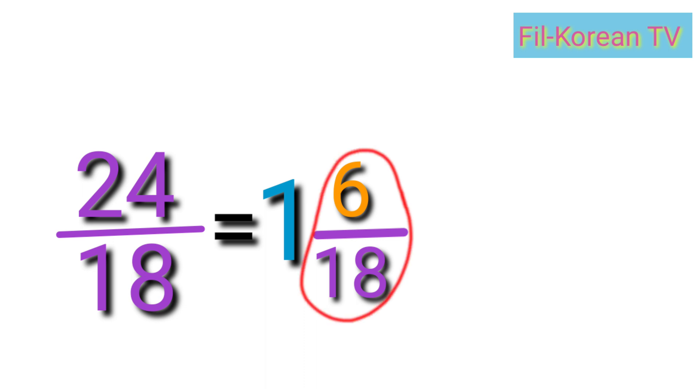But the fraction six-eighteenths can be reduced to lowest term because six and eighteen have common factors. So, we need to divide them by their GCF. The GCF of six and eighteen is six.